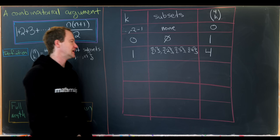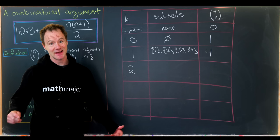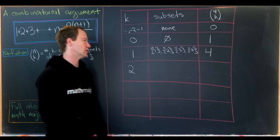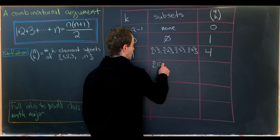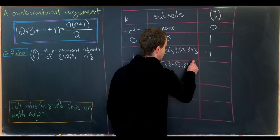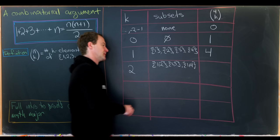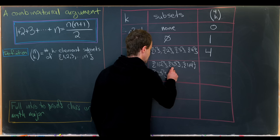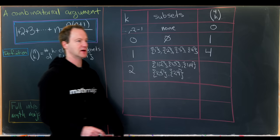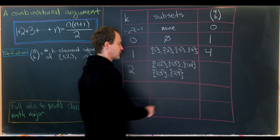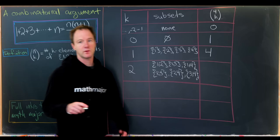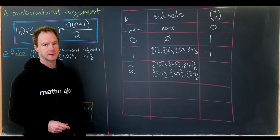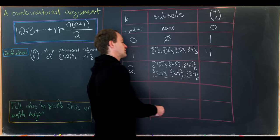Now let's look at two-element subsets, listing them systematically so we don't miss any. Starting with two-element subsets that contain 1: {1,2}, {1,3}, and {1,4}. Then subsets containing 2 not already listed: {2,3} and {2,4}. Then subsets containing 3 not already listed: {3,4}. All subsets containing 4 are already listed. That gives us all two-element subsets of {1, 2, 3, 4} — there are six such subsets.